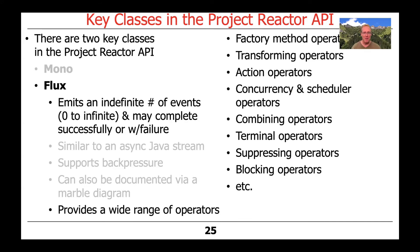Fluxes, like Monos, also have many different types of operators. They have factory method operators used to create Fluxes from various other data types like collections, a whole slew of transforming operators that can change the value or type of elements emitted by a Flux, action operators with side effects, concurrency and scheduler operators that map operations onto different threads often in different thread pools, combining operators that can join and merge multiple Fluxes, terminal operators used to trigger the processing of a Flux stream, suppressing operators that ignore emitted results, and blocking operators for when you want to wait for all processing to be done — though this should be used sparingly. There are many other types of methods as well.